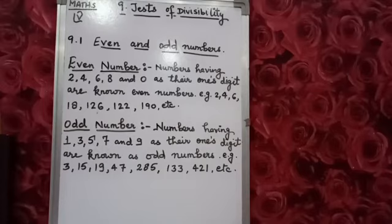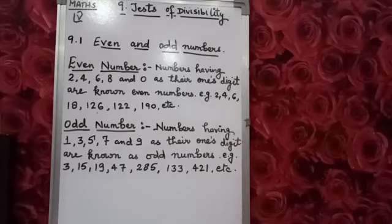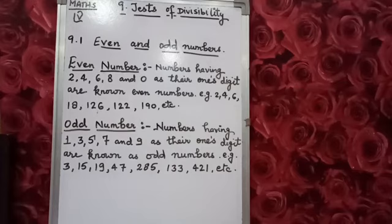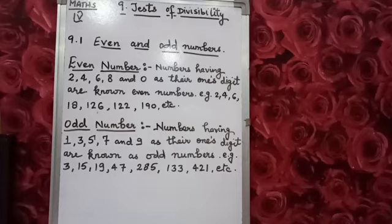Students, please open page number 48, chapter 9, Test of Divisibility. In this chapter we are going to study divisibilities of different digits — like divisibility by 2, divisibility by 3, by 6, divisibility by 9. We are going to study which number is divisible by the given number, like even numbers and odd numbers. Let's start with even numbers and odd numbers.